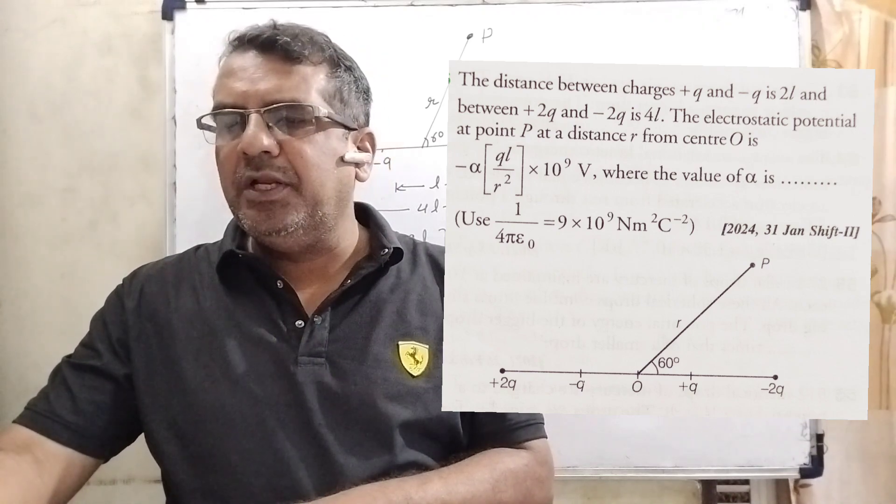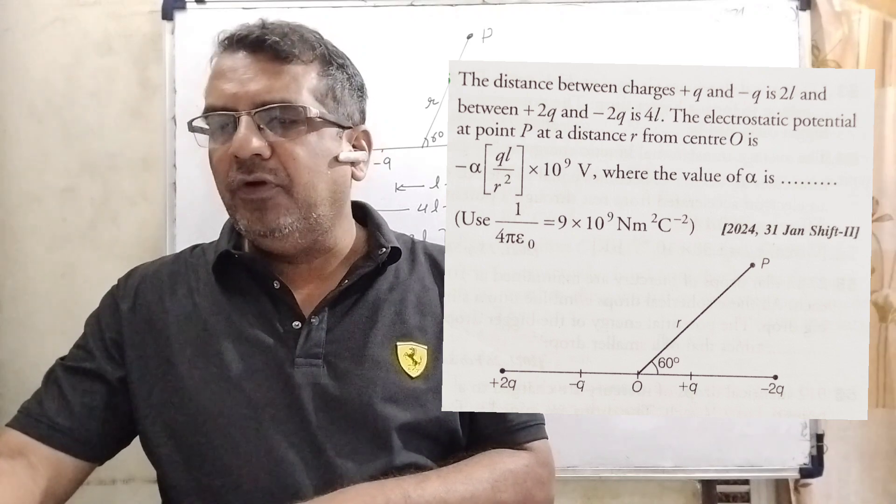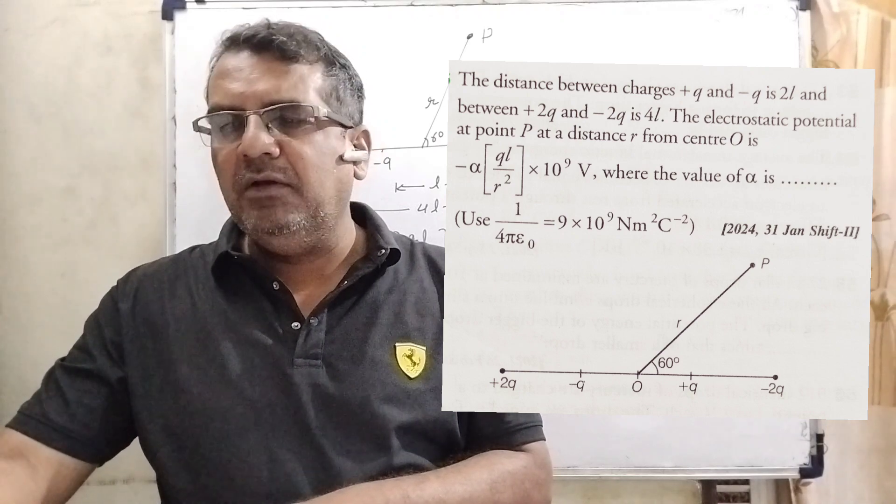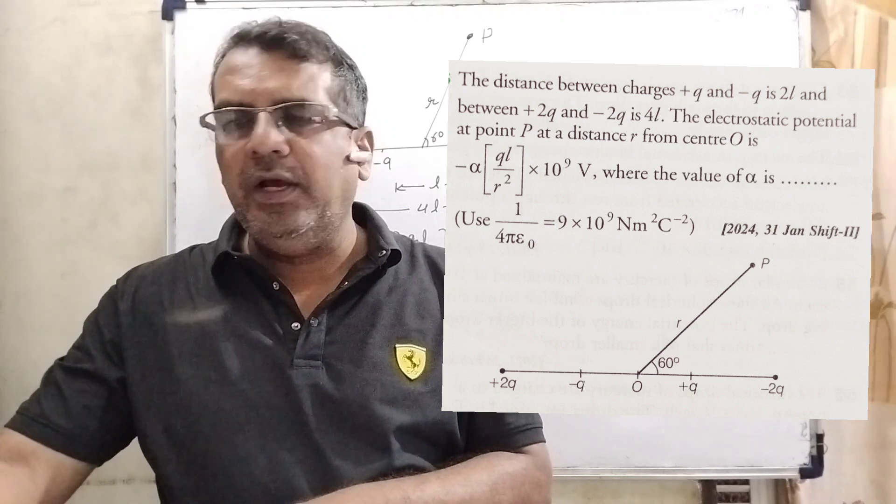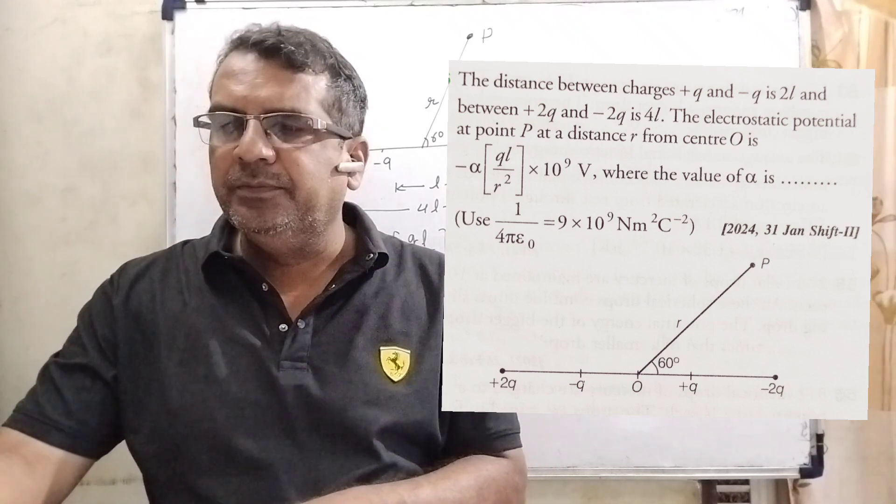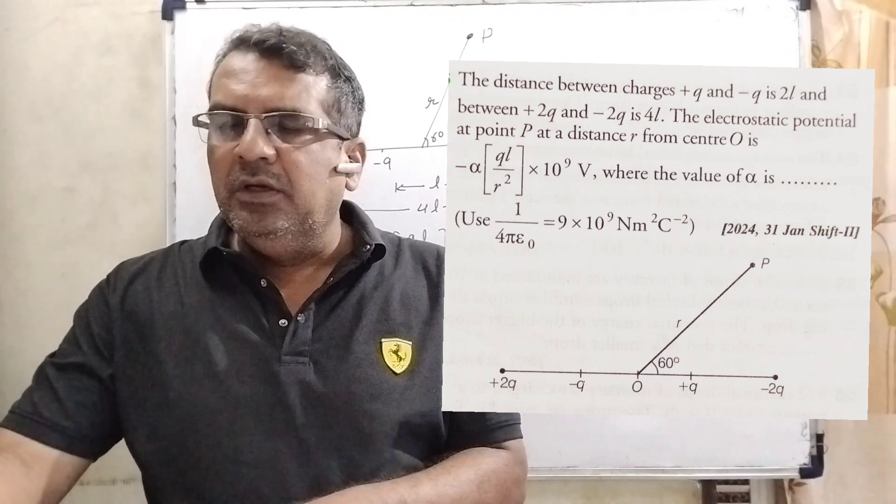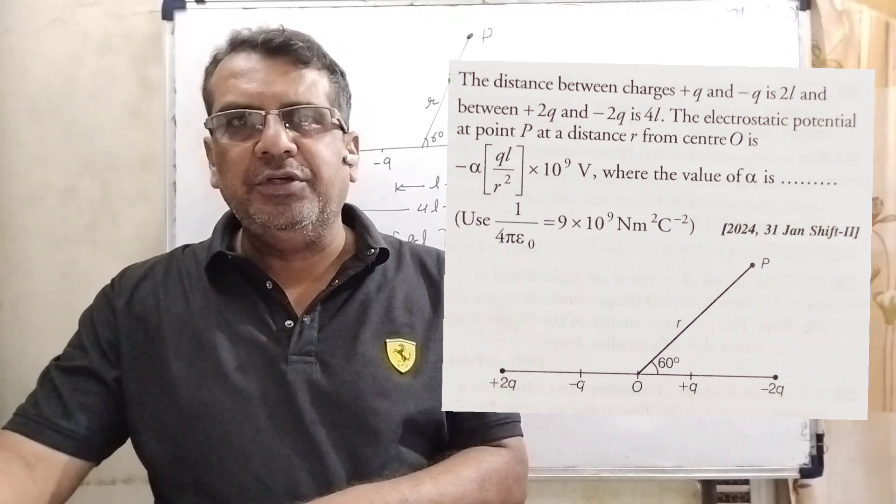The electrostatic potential at point P at a distance R from O is minus alpha into QL by R square into 10 raised to power 9 volt, where the value of alpha is. This question is asked in JMS 2024.